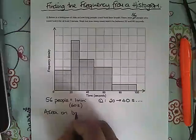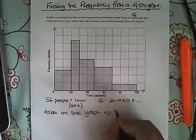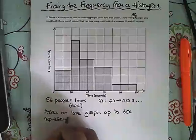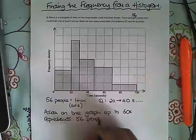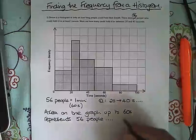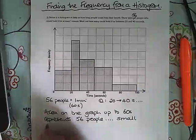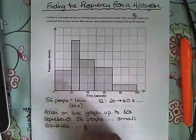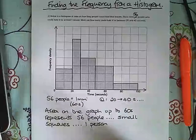The area on the graph up to 60 seconds represents 56 people. I'm going to work out how many small squares that is, and then I can find out what one person is worth in terms of small squares.